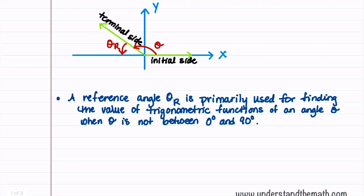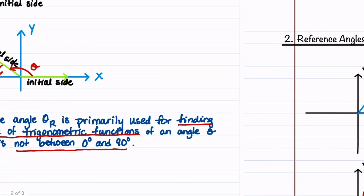A reference angle theta sub r is primarily used for finding the value of trigonometric functions for an angle theta when theta is not between 0 degrees and 90 degrees — or when theta is not an acute angle. Reference angles are used a lot in trigonometry because we're often working with angles that are not acute angles.